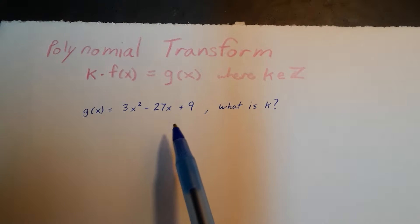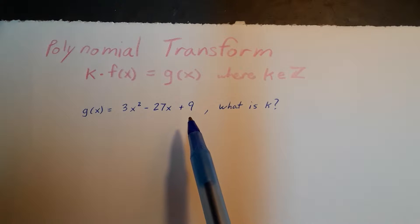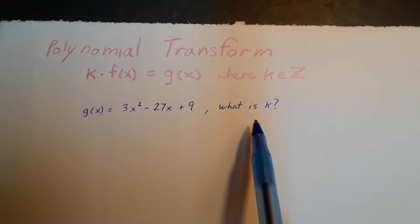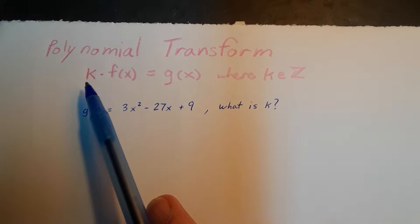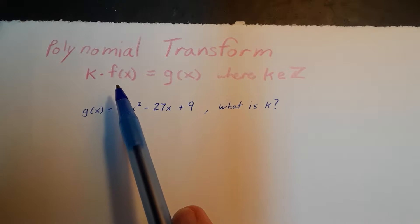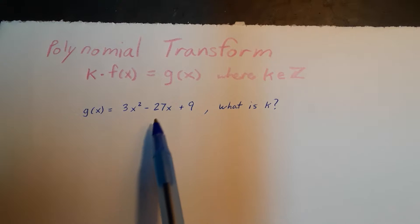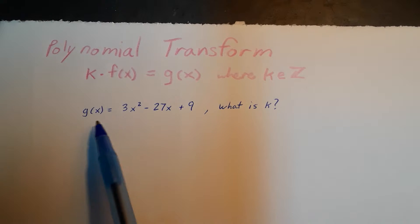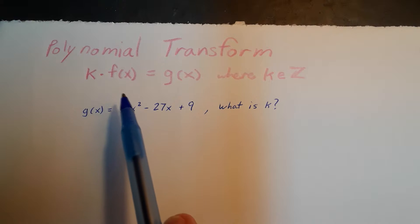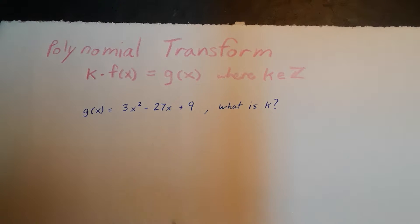So if we're given this function, we want to know what k is. If the form is an integer times a function gives us the new function, and this is the new function, then there must have been another function that had been multiplied by an integer to give us this.